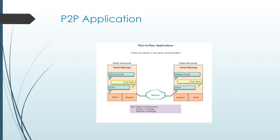A peer-to-peer application allows a device to act both as a client and a server within the same communication. Both peers can initiate a communication and are considered equal in the communication process. P2P applications require that each end device provide a user interface and run a background service. Some P2P applications use a hybrid system where resource sharing is decentralized, but the indexes that point to resource locations are stored in a centralized directory. In a hybrid system, each peer accesses an index server to get the location of a resource stored on another peer. P2P applications can be used in P2P networks, client-server networks, and across the internet.